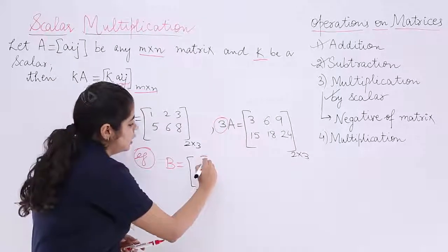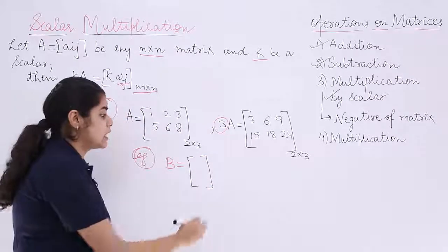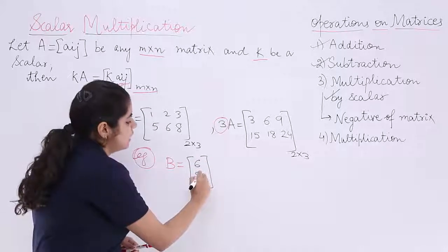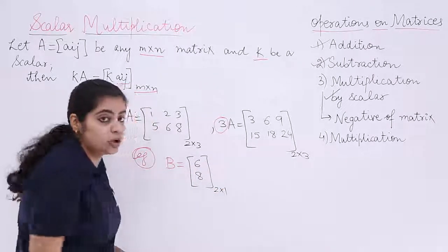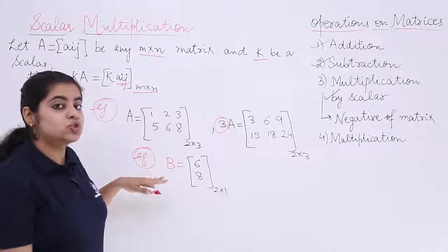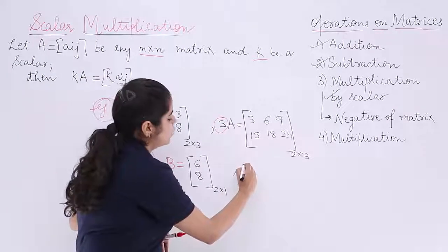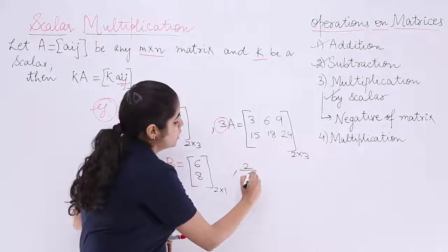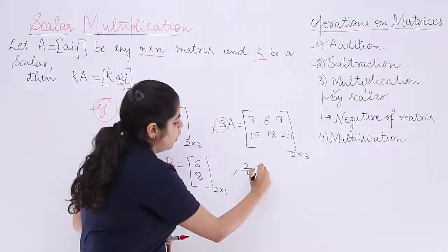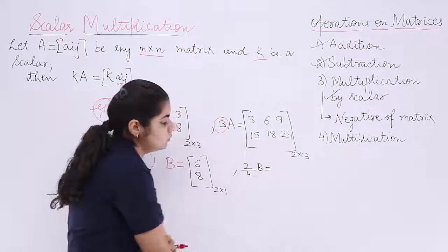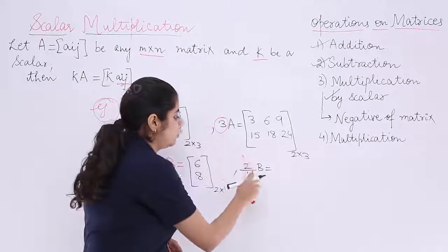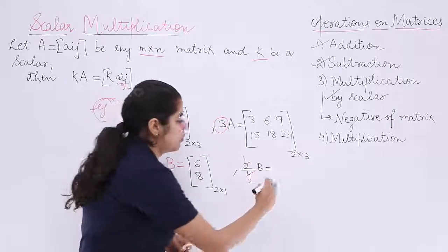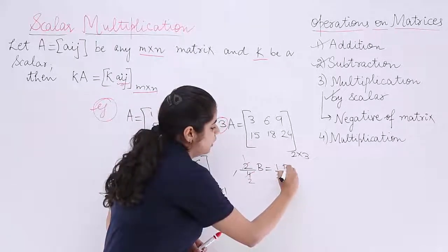Matrix B is a column matrix with two rows and one column. I am supposed to find out half of B. So it is half of B that I am supposed to find out.